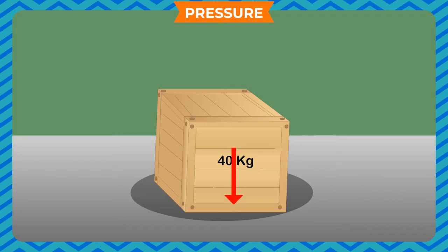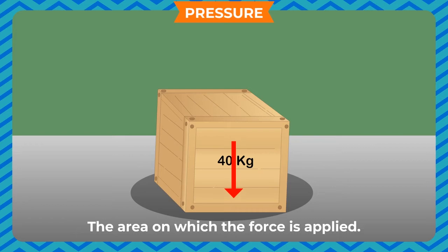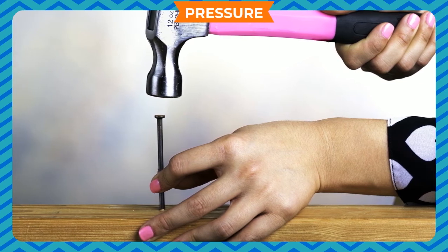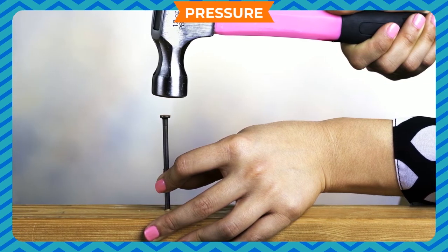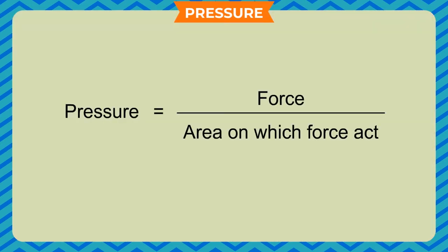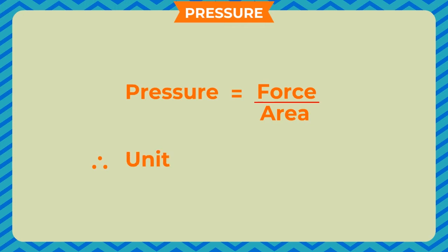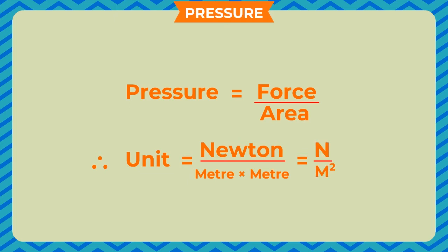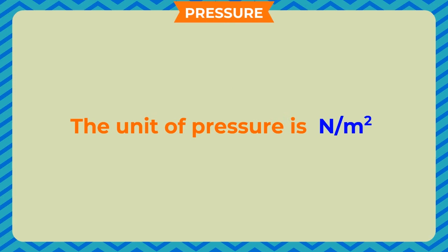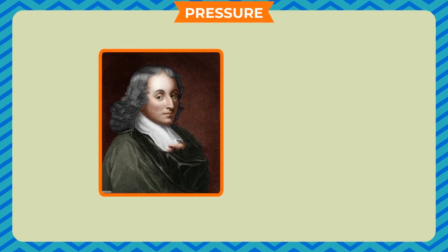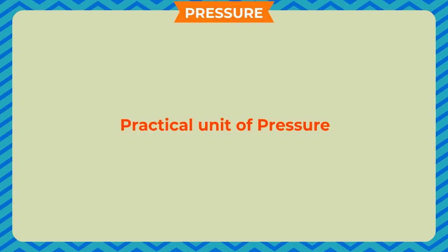Pressure: The effects of force depend mainly on two factors — the amount of force applied and the area on which the force is applied. The physical quantity that relates force and the area on which it acts is called pressure. Pressure is defined as force per unit area. The SI unit is Newton per meter squared, also called Pascal (Pa), named after French scientist Blaise Pascal. The practical unit of pressure is bar, which equals 1 lakh Pascals.